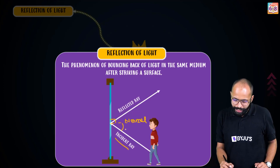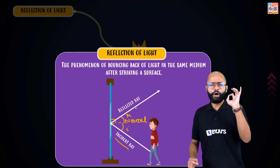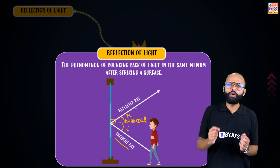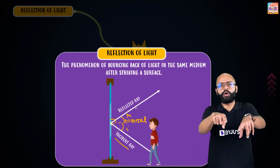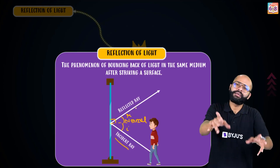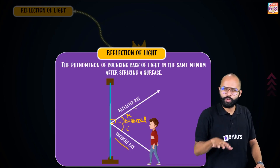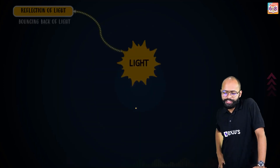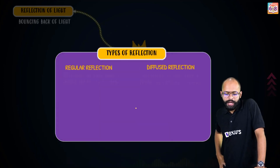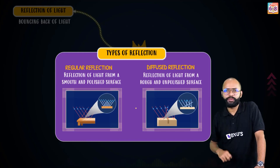The angle between the incident ray and the normal is the angle of incidence, and the angle between the reflected ray and the normal is the angle of reflection. Always measure the angle of incidence and angle of reflection from the normal — don't measure from the surface. This is a common confusion point. So this is about reflection of light. Now there are types of reflection — yes, there are two types.